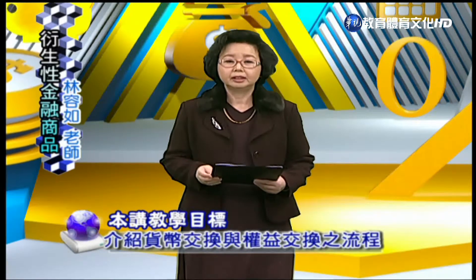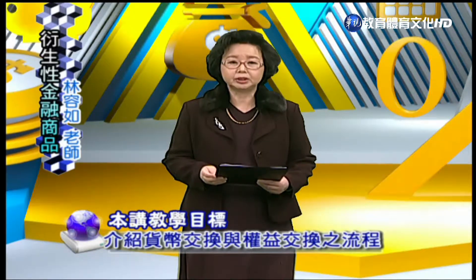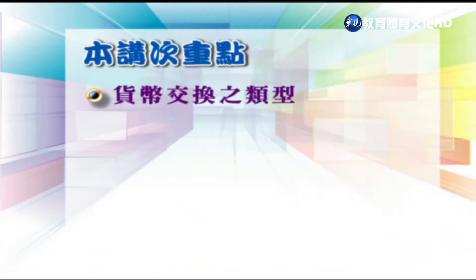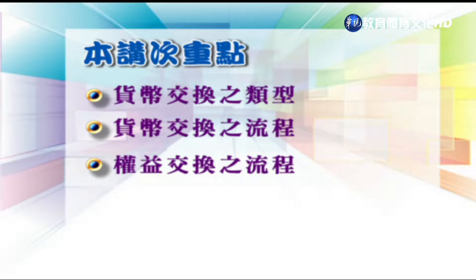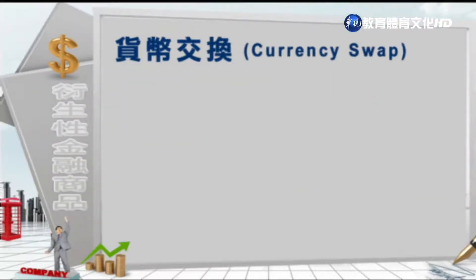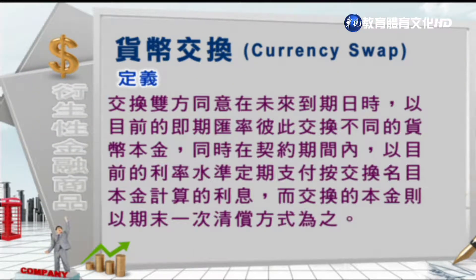今天的教学目标是介绍货币交换与权益交换的流程。本讲次的重点分别是：一、货币交换的类型；二、货币交换的流程；三、权益交换的流程。首先来看第一个重点——货币交换的类型。货币交换英文称为Currency Swap，它的定义是交换双方同意在未来到期日时，以目前的即期汇率彼此交换不同的货币本金。